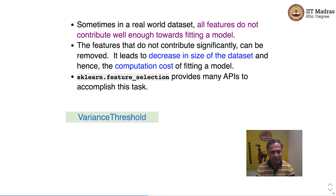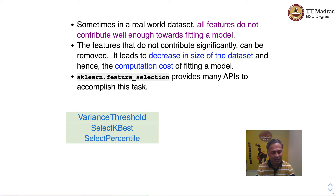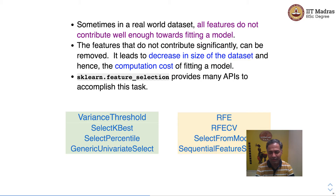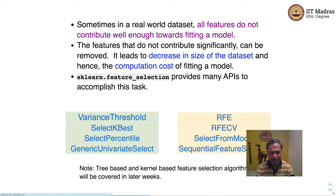These are some of the classes provided in the feature_selection module: VarianceThreshold, SelectKBest, SelectPercentile, GenericUnivariateSelect, then RFE which is Recursive Feature Elimination, Recursive Feature Elimination with Cross-Validation, SelectFromModel, and SequentialFeatureSelector. There are some more feature selectors based on trees and kernels, which will be covered in later weeks when we study kernels and trees.